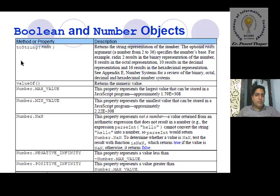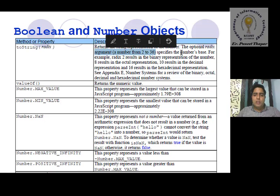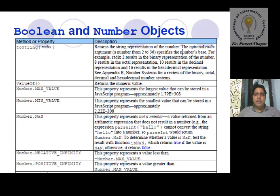For Number objects, we also have toString with a radix argument. The optional radix argument defines a number from 2 to 36 that specifies the base of the number. For binary we use base 2, for octal we use base 8, for hexadecimal we use base 16, and for decimal we use base 10.